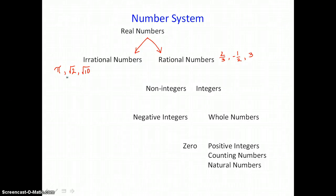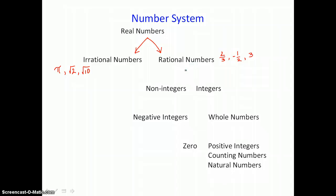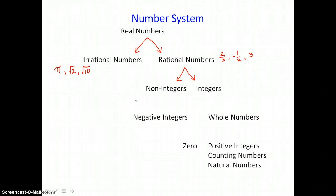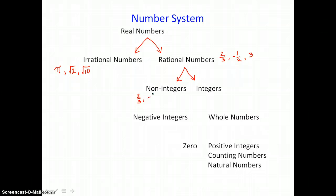Irrational numbers can be written as decimals that don't terminate or repeat, but they cannot be written as fractions. Rational numbers can be divided into two groups. Subsets of the rational numbers are the non-integers and the integers. Two-thirds is going to be a non-integer, negative one-half is a non-integer, but three is an integer.